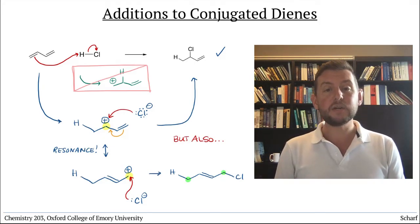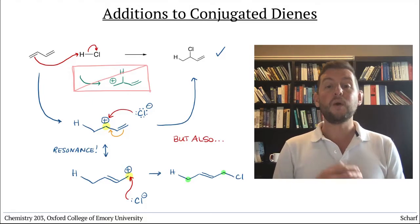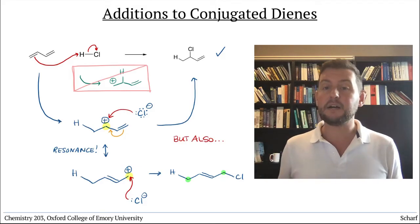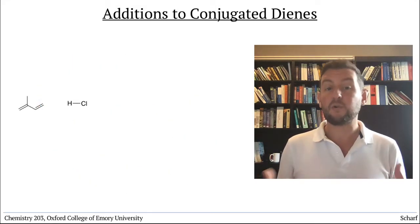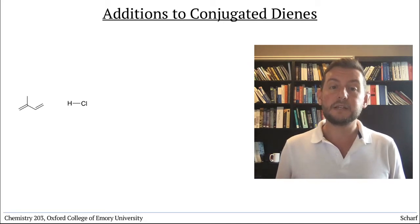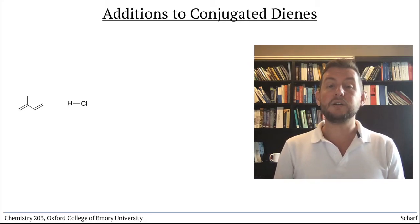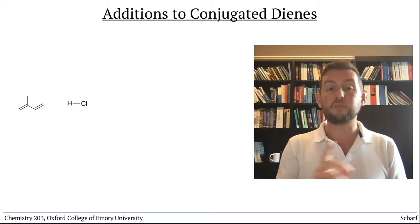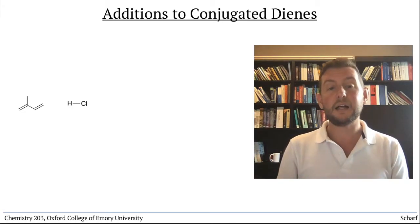This is actually quite generalizable. When dienes react with any strong acid, like HCl, HBr, HI, H2SO4, or even the generic H3O+, the acidic proton goes to one of the terminal carbons to produce a resonance stabilized allylic carbocation.